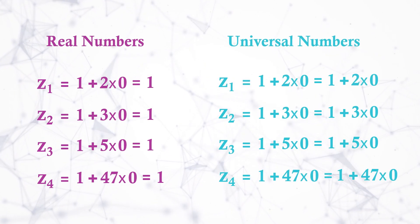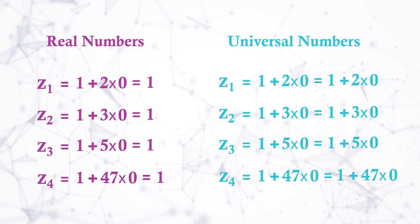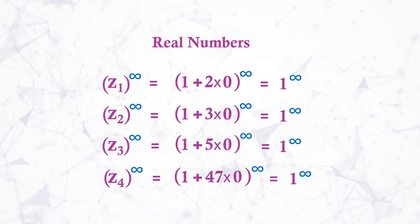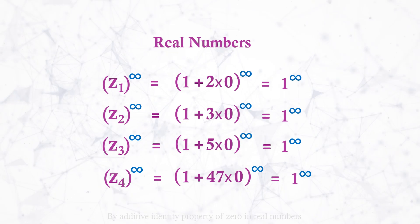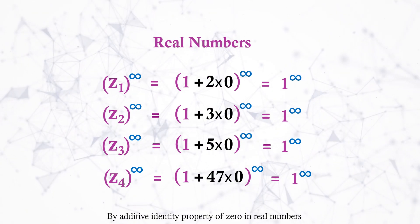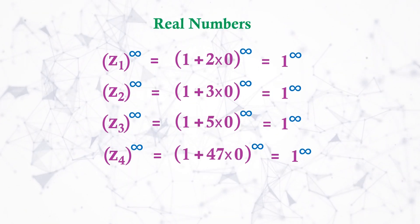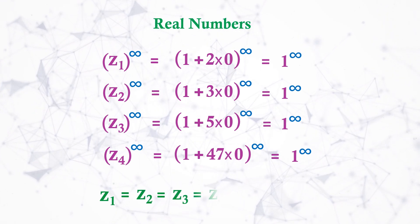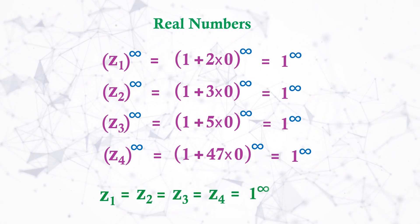Here we can't see much difference in these outputs. So let's magnify these numbers by raising the power of equation by infinity. In real numbers 0 and its magnitude is ignorable in this situation, which means z₁ = z₂ = z₃ = z₄ = 1^∞.